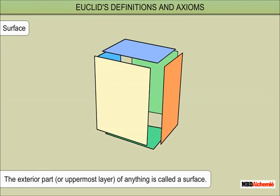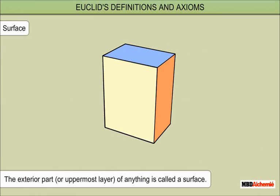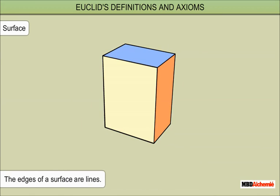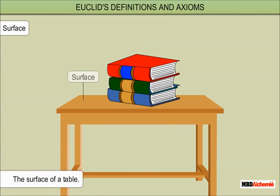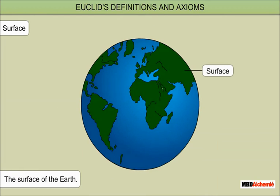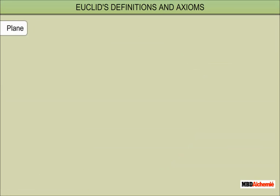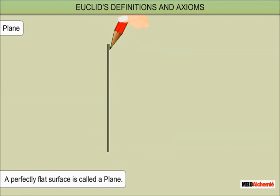Surface: The exterior part or uppermost layer of anything is called a surface. The edges of a surface are lines. For example, the surface of a book, the surface of a table, and the surface of the earth.